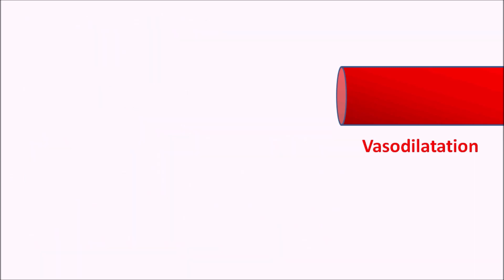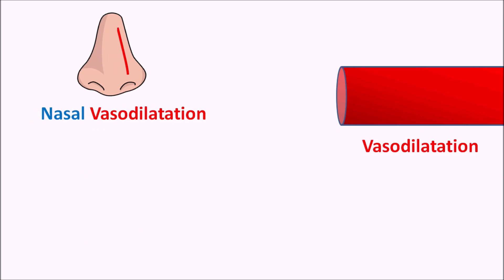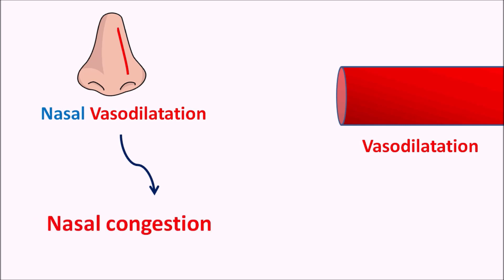Alpha blockers can also produce nasal vasodilation. Because of this, they can reduce the clearance of the nasal pathway, resulting in nasal congestion. That's why alpha 1 agonists are used as nasal decongestants, whereas alpha 1 blockers can produce nasal congestion.